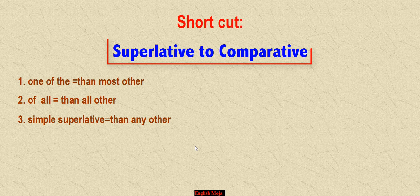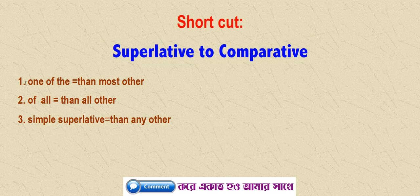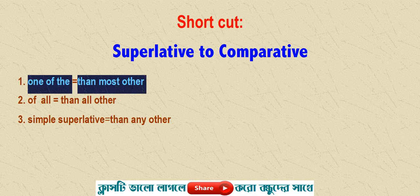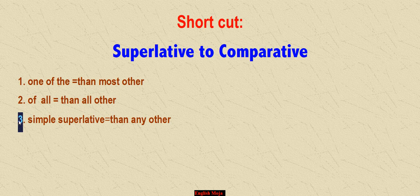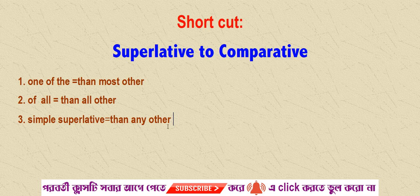Shortcut: Superlative to Comparative. Number 1: 'one of the' superlative is equal to 'than most other.' Number 2: plural is equal to 'than all other.' Number 3: simple superlative is equal to 'than any other.' Please note this shortcut — that will be good for you.